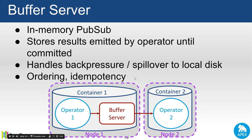To recap: the buffer server is an in-memory pub/sub mechanism that stores results emitted by operators until consumed by downstream operators, handles back pressure, and if it goes out of memory it automatically spills to local disk — all taken care of by the platform with no code required from the application developer. The buffer server also guarantees ordering and idempotency for tuples.